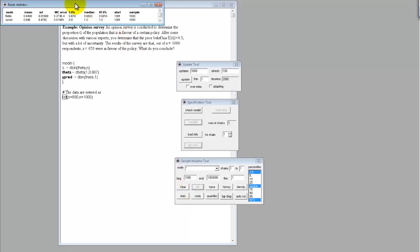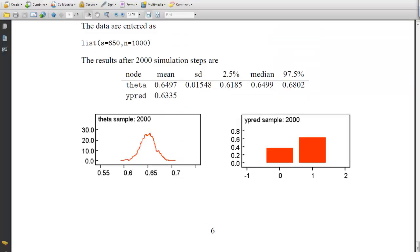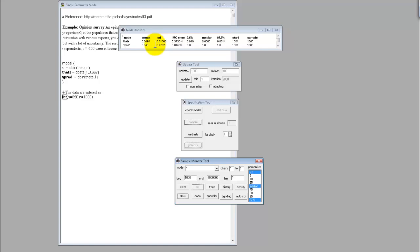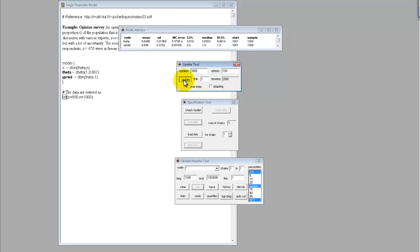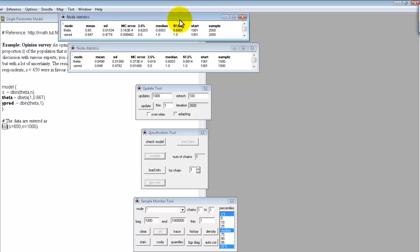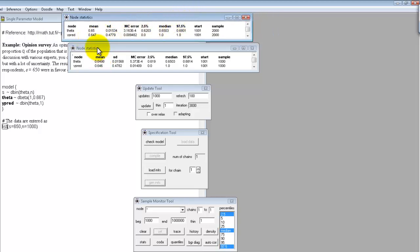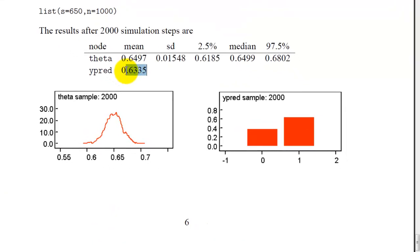So we have Theta with a mean of 0.6498, 0.6497 off a little bit. And then our y predict is 0.646. 0.646 is off. Let me run another 1,000. And then we'll get our stats again. See where we are. So Theta goes up to 0.65. Y predict 0.647. So it's still off a little bit there.